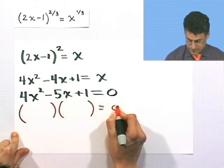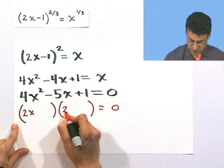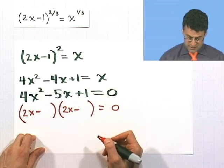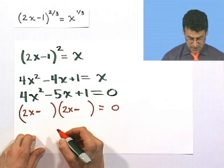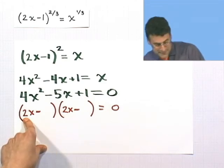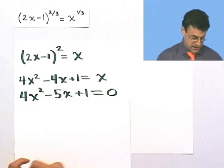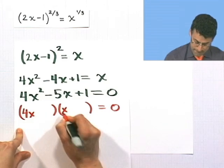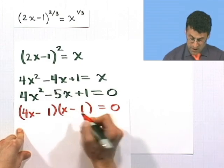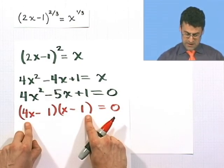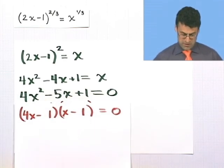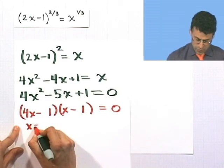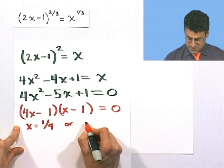Let's hope this can be factored. Trying 2x and 2x doesn't work. Trying 4x and x with both negative signs and ones: (4x minus 1)(x minus 1). This gives negative x and negative 4x combining to negative 5x, and 1 — that works. So either 4x minus 1 equals 0, giving x equals 1/4, or x minus 1 equals 0, giving x equals 1. Remember, we always have to check both solutions back in the original equation.